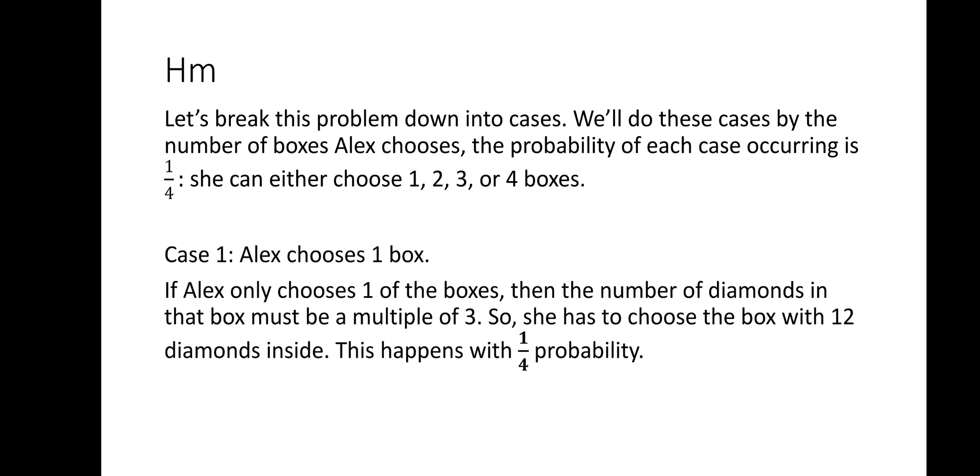For case 1, Alex chooses just one box. If Alex chooses one box, then the number of diamonds in that box has to be a multiple of 3. So she has to choose the box with 12 diamonds inside, which happens with a 1/4 probability.